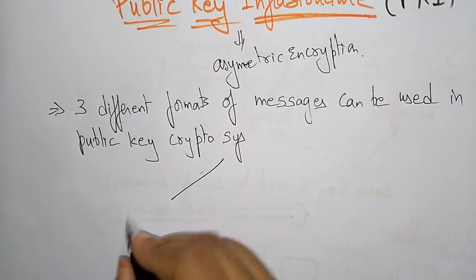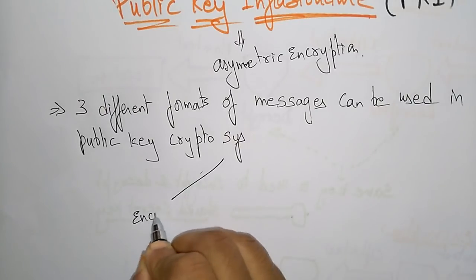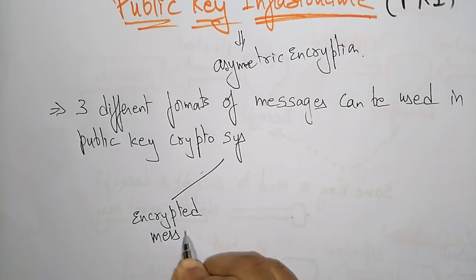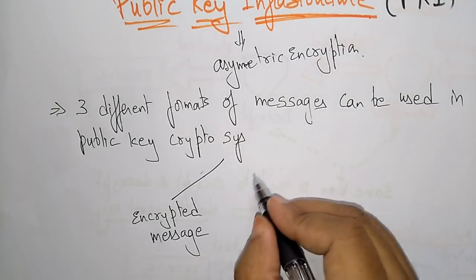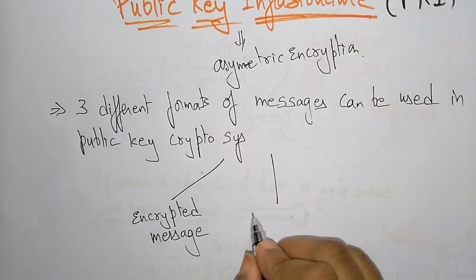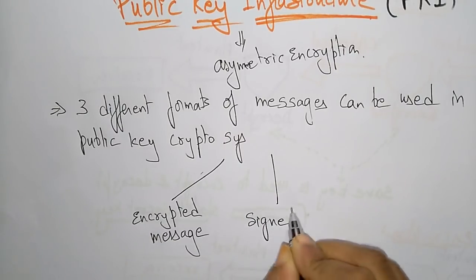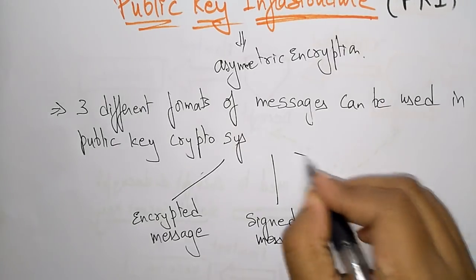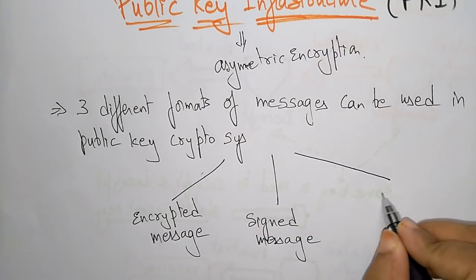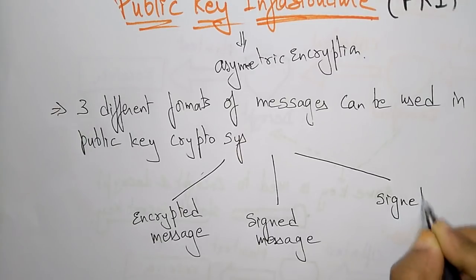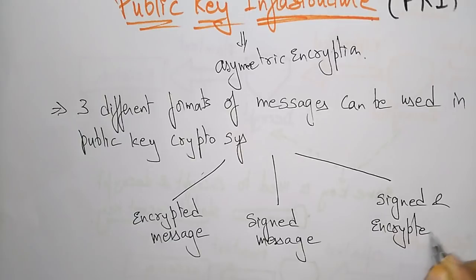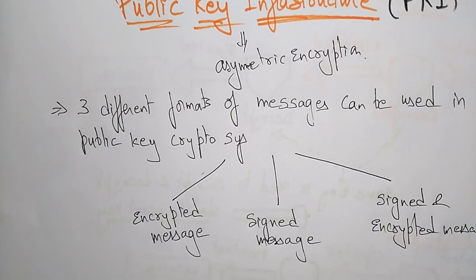The three different message formats used in public key cryptosystems are: first, the encrypted message; second, the signed message; and third, the signed and encrypted message. These are the three different formats that can be present in public key infrastructure.